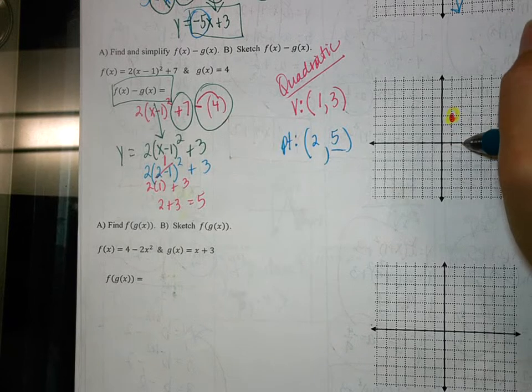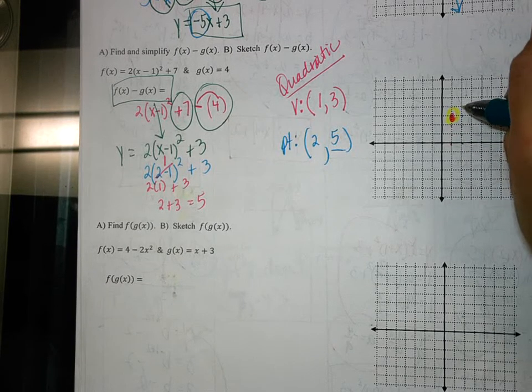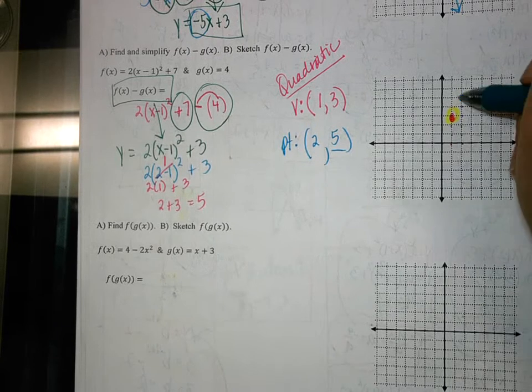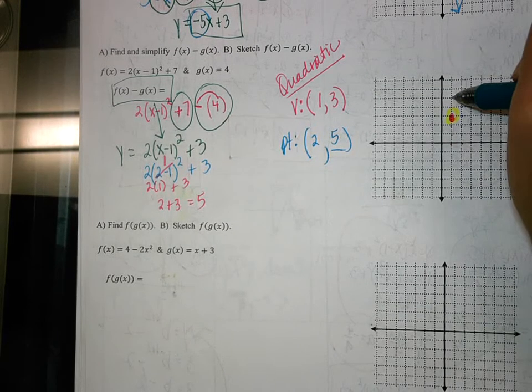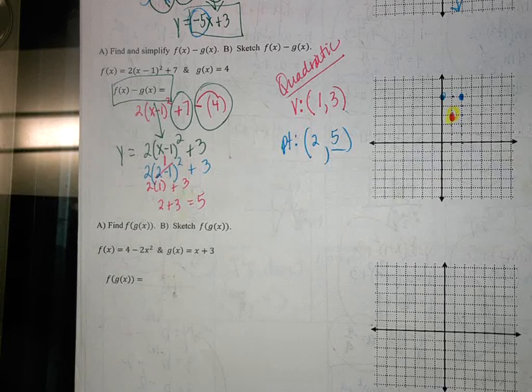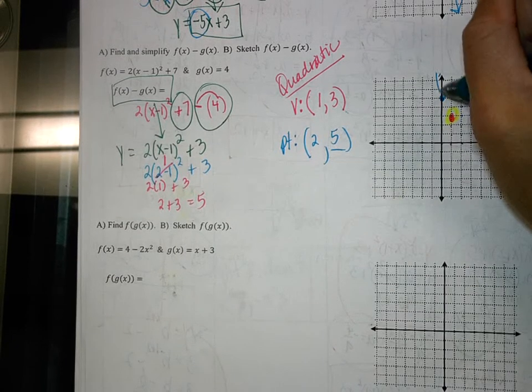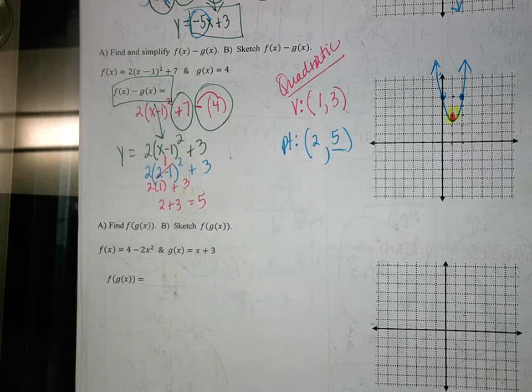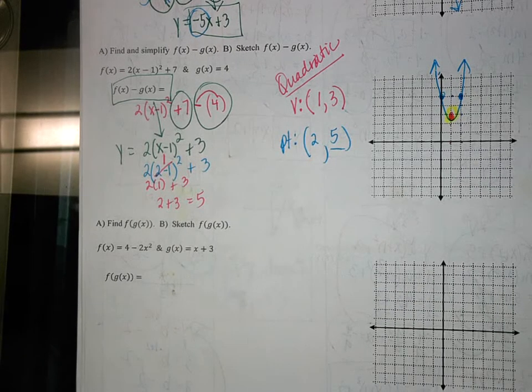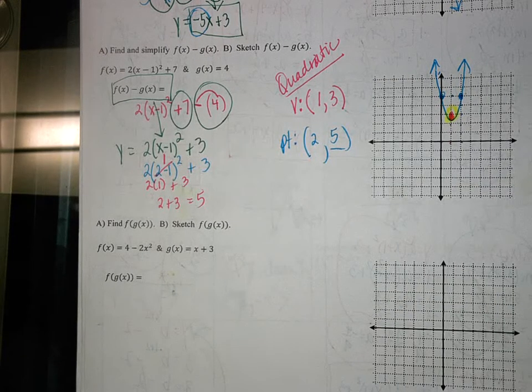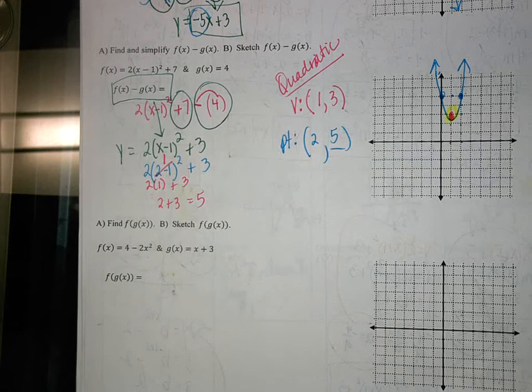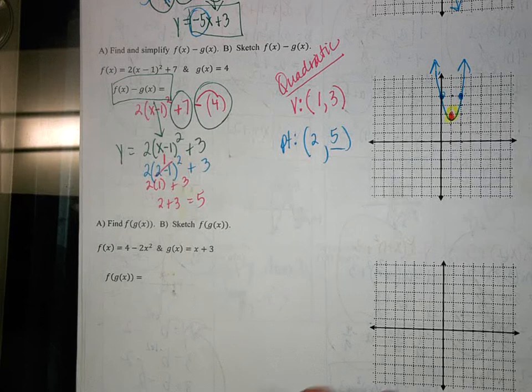So this other point is at 2, 5. So we go right 2, up 1, 2, 3, 4, 5. Make our point. So if I have a point there, that is 1 away from the vertex, so I go on the other side, 1 away. And then we can draw our quadratic function. Question? Any questions? Alright. Next one.